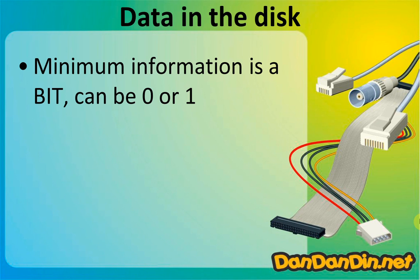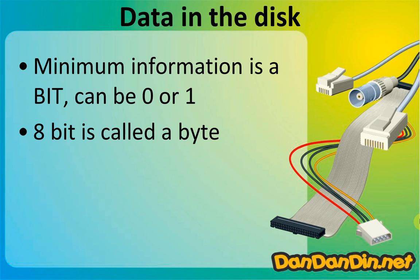The minimal information that can be stored on a disk is a bit — it can be 0 or 1. Since 0 or 1 is not enough to write something, bits are combined together. Eight bits is called a byte.